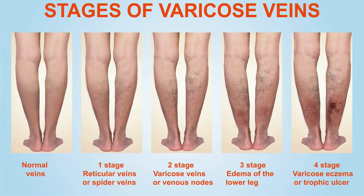Stage three, you start seeing lower extremity swelling — that's what edema means. Stage four is when you start to actually see the worst portion of the disease, where you start to see hyperpigmentation. That's discoloration of the skin, and that's actually what we call hemosiderin deposits.